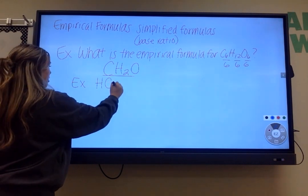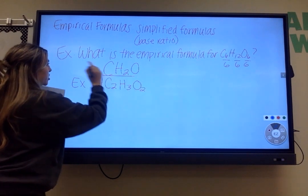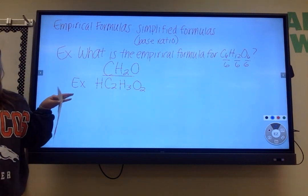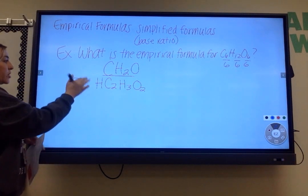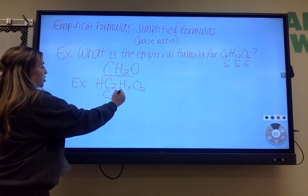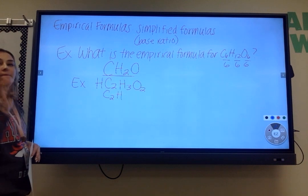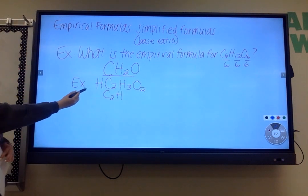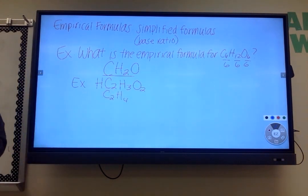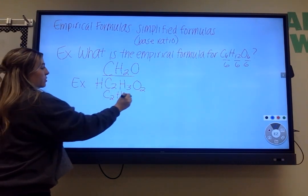It also might give you something that looks a little crazy like this. What is the empirical formula for HC2H3O2? If it ever gives you something that looks a little chaotic I want you counting how many of each thing you have. I want you to write the most simple version of this first. How many C's do I have here? Two. How many H's do I have? I have four total H's - I have three right here and one right here so I have a total of four. How many O's do I have? Perfect.